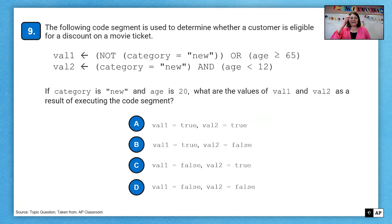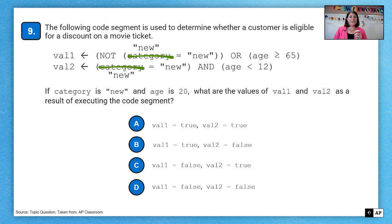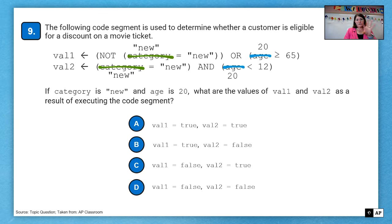On to question nine. The following code segment is used to determine whether a customer is eligible for a discount on a movie ticket. The category is new. So I'm just going to go ahead and replace category with that value. And the age is 20. So if that is the case, what are the values of VAL1 and VAL2 as a result of executing this code segment? So we see first this is true because new equals new. But then it says not. So now that's false. And then on the right, 20 is not greater than 65. So that's false. So I have false or false, which results in the entire segment being false.